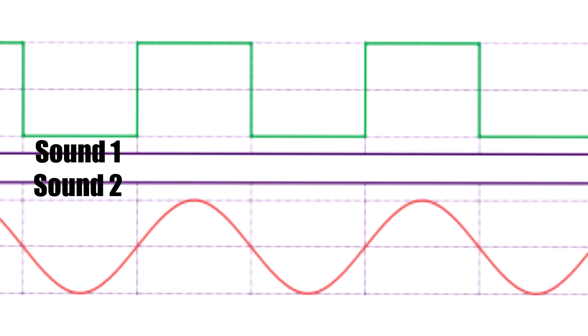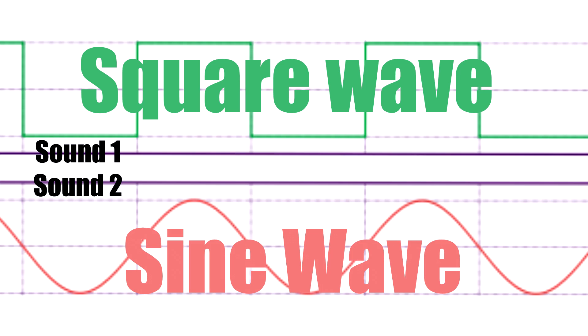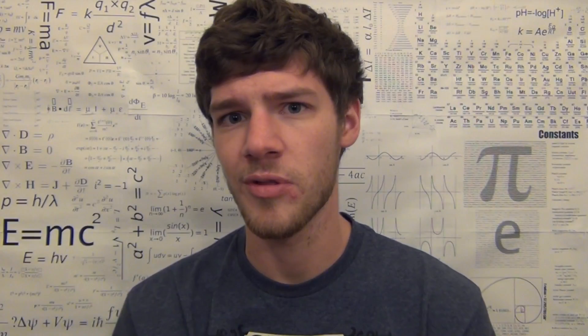Hmm, it appears that our hypothesis was right. The first sound I played was a square wave, whereas the second sound I played was actually a sine wave. So we figured out that square waves are more annoying than sine waves.